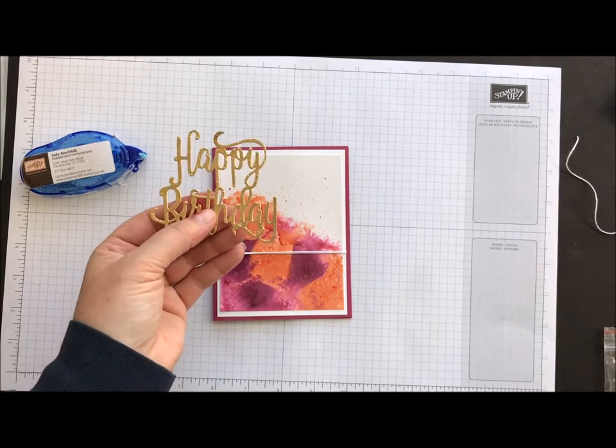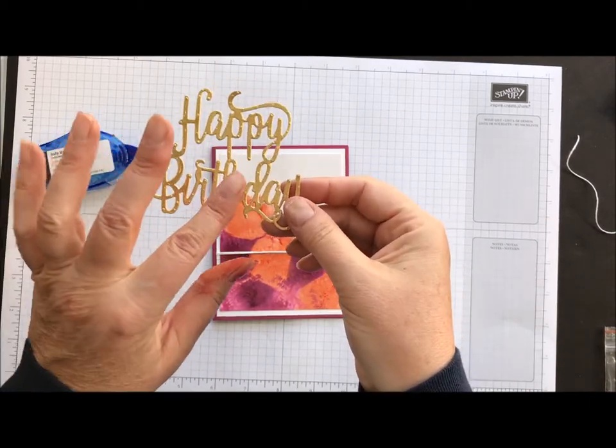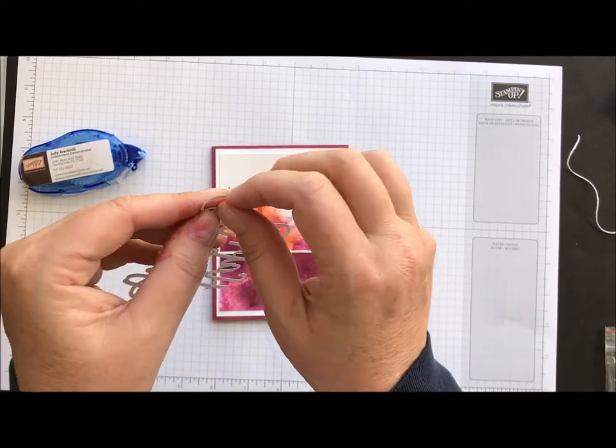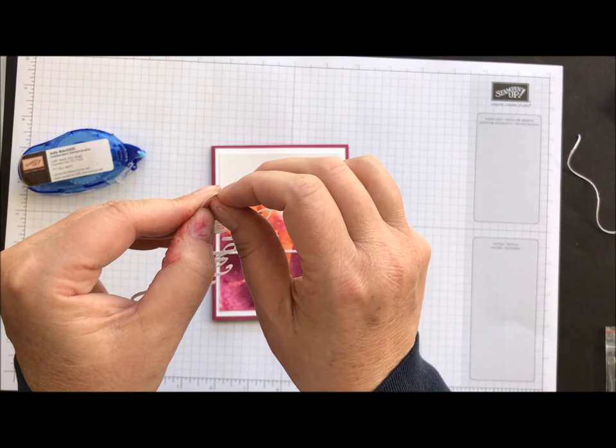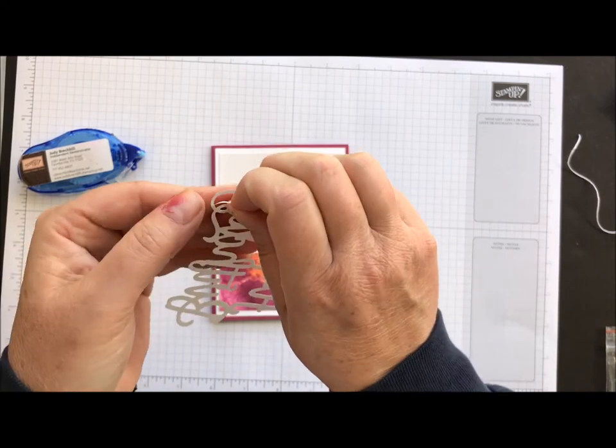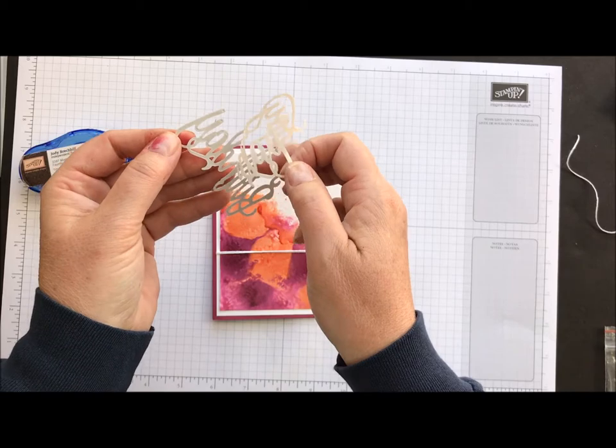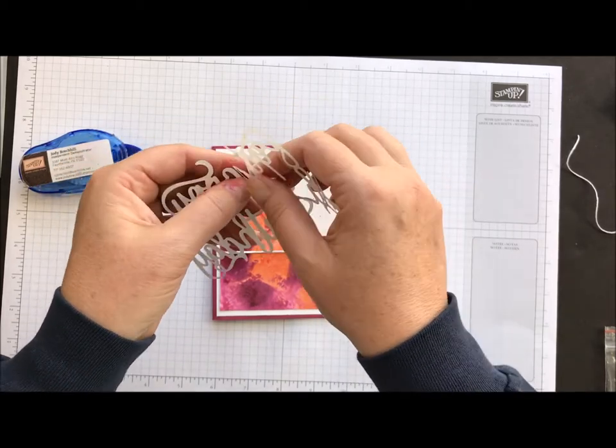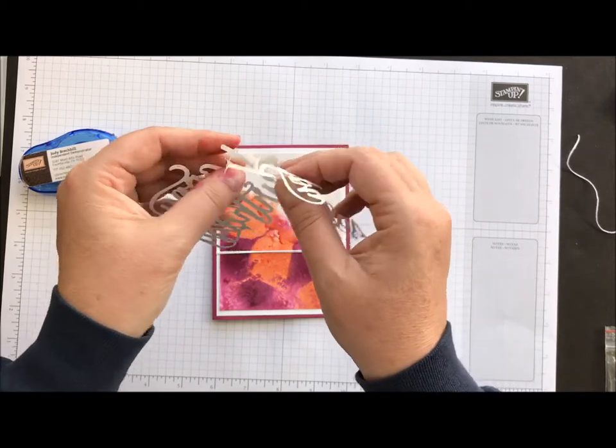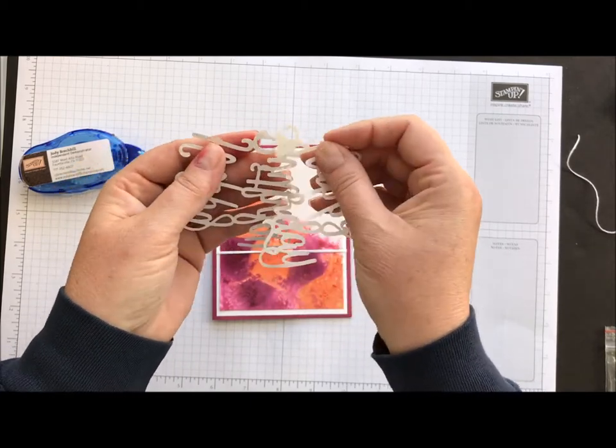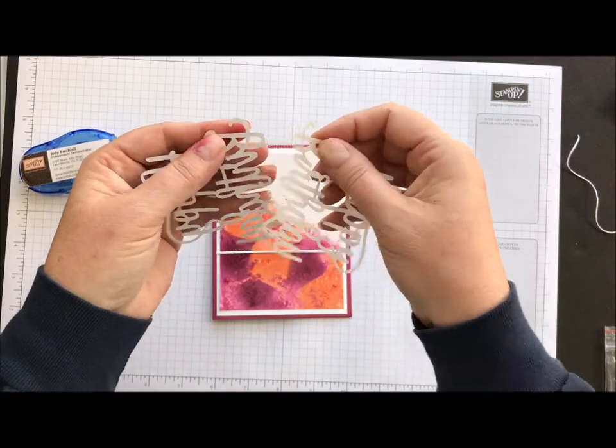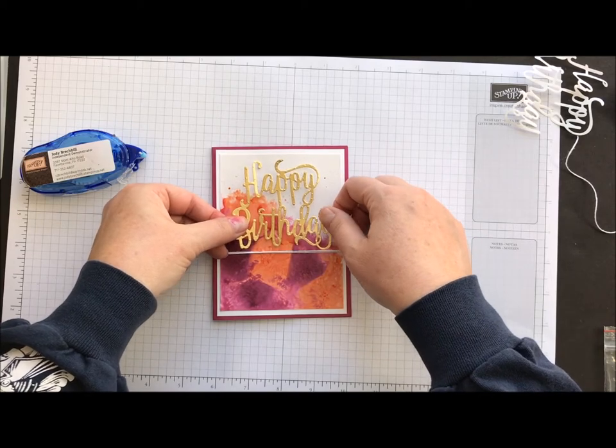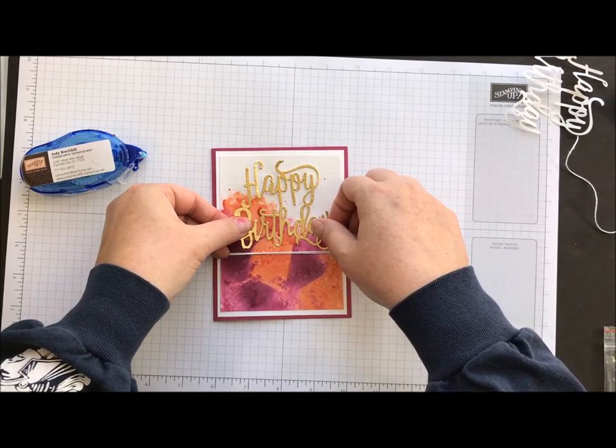I took our happy birthday thinlit, ran that through the big shot with our gold foil paper. And I put a Sizzix adhesive sticker on the back. So you attach that sticker to the back of your cardstock before you run it through the big shot. And look, it creates a gorgeous sticker. I don't have to worry about any fuss with any other adhesive. Carefully pulling that off. Cause this is so detailed and beautiful. And I'm just going to stick that happy birthday right on there.